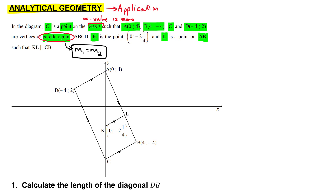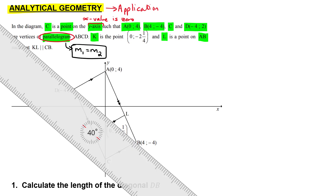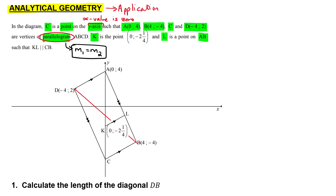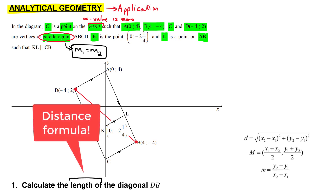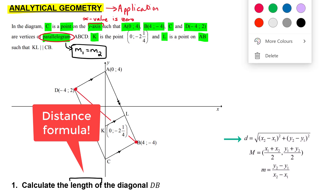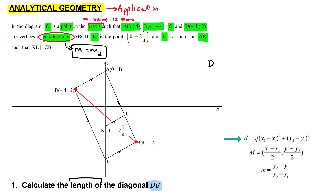To begin with, calculate the length of the diagonal DB. Focusing on the parallelogram with vertices A, B, C, D, the diagonal DB runs down the centre. When you see the word 'length', you think of the distance formula. We write DB equals the square root, taking D as point one and B as point two.